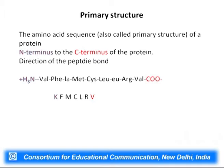We cannot have a valid protein primary structure if we disrupt the amino acid sequence. If we change the amino acid sequence we will end up with an entirely different protein. These aspects we will take up when we talk about protein folding.